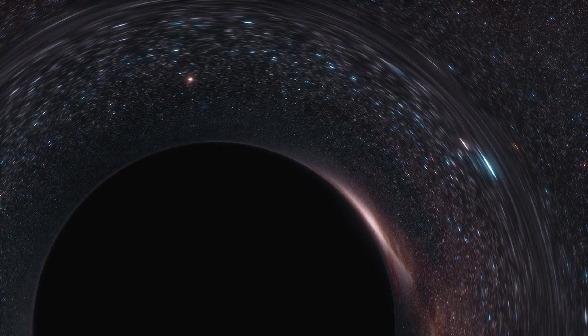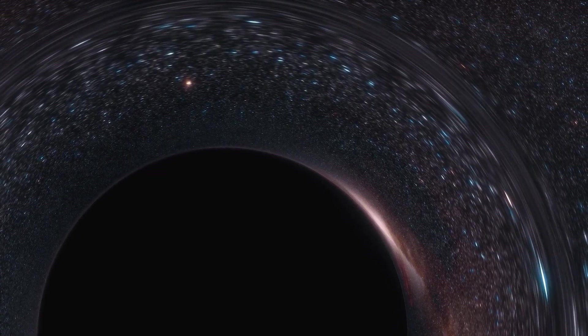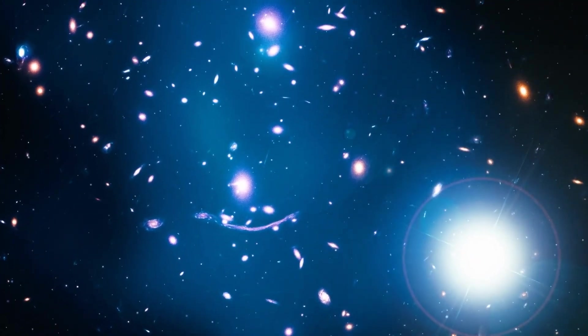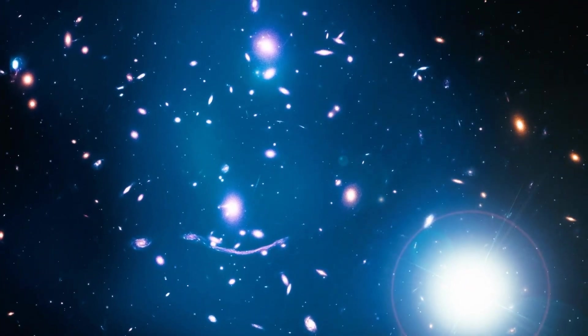This phenomenon, known as gravitational lensing, would cause stars and other celestial bodies to appear to change position in the sky, when in fact, they would remain firmly in place.